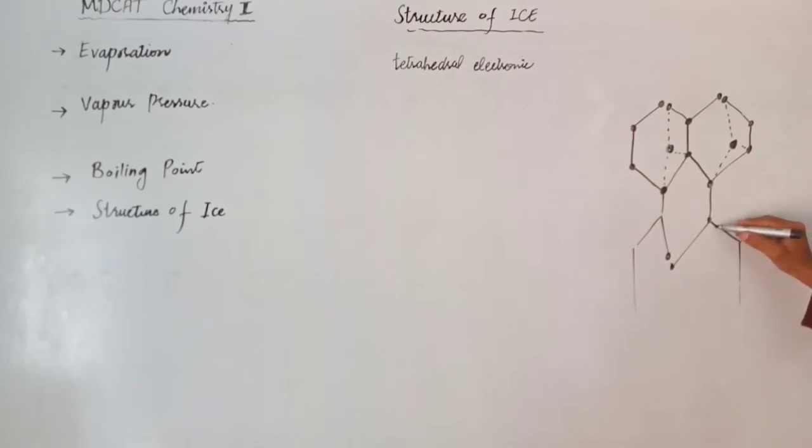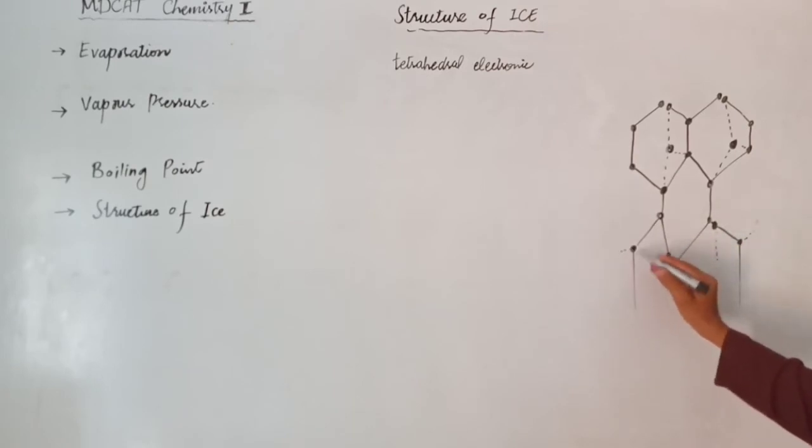So here you will also make it like this. The diagram doesn't need to be perfect, but I just want to explain it to you so you understand. This is the structure, which is called the tetrahedral structure.